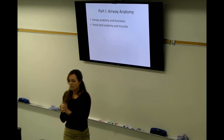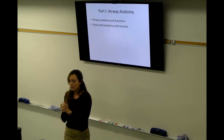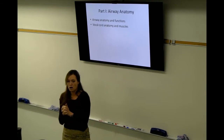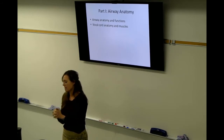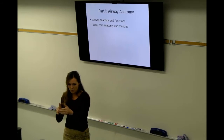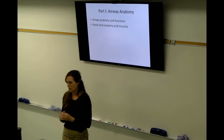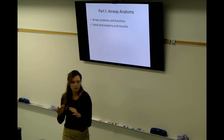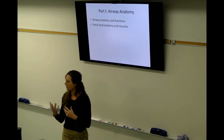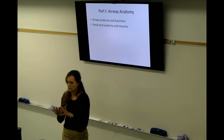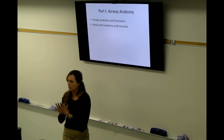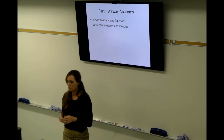Back to vocal cord anatomy and muscles: the vocal cords are located within the thyroid cartilage, attached in the front to the thyroid cartilage. On the back, the movable side is the arytenoid cartilages. The muscles of speaking are attached to that side, moving our vocal folds together, pulling them tighter or looser.